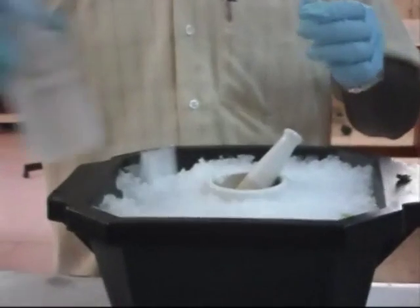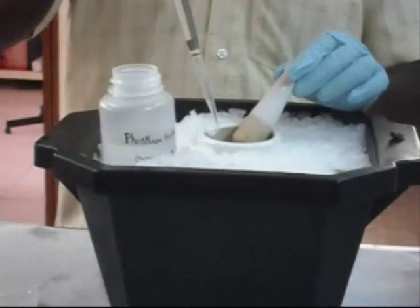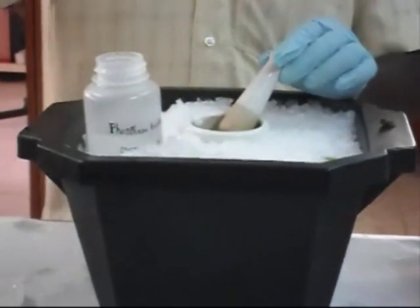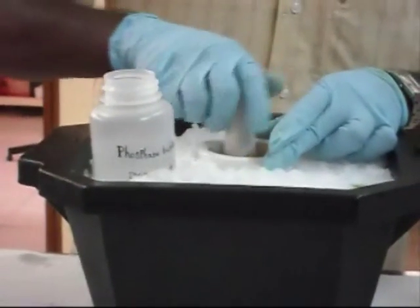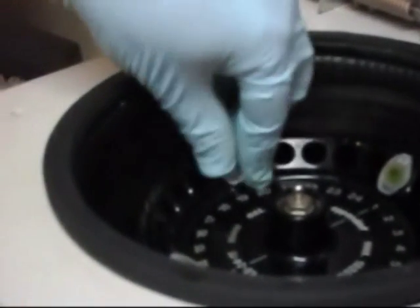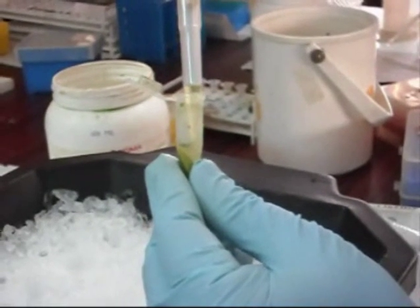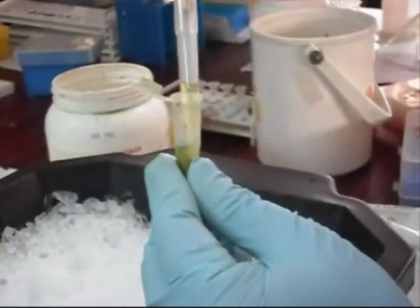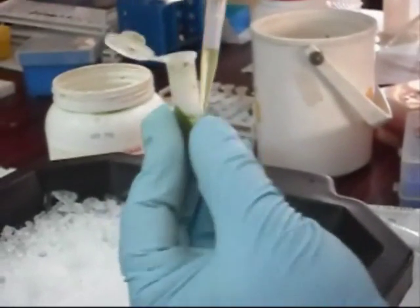The leaf tissues are ground along with the addition of phosphate buffer. These are transferred into Eppendorf tubes and centrifuged at 12,000 RPM for 20 minutes. The protein containing supernatant was collected and stored at minus 80 degrees Celsius for further use.